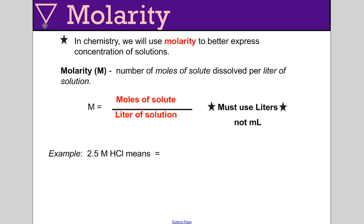For example, 2.5 molar HCl hydrochloric acid means 2.5 moles of hydrochloric acid dissolved in one liter total solution. That solution can be made of water or other things, but the total volume of the entire solution, including the hydrochloric acid, is one liter.